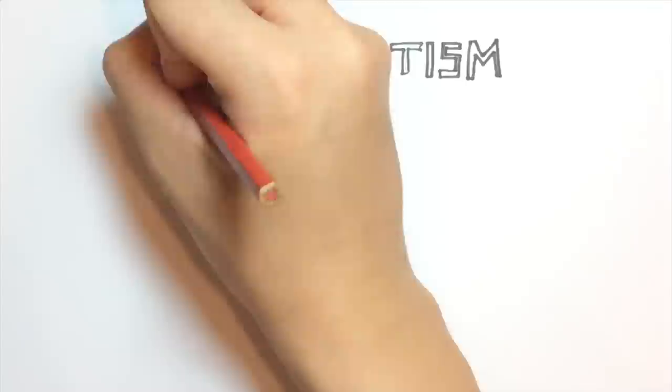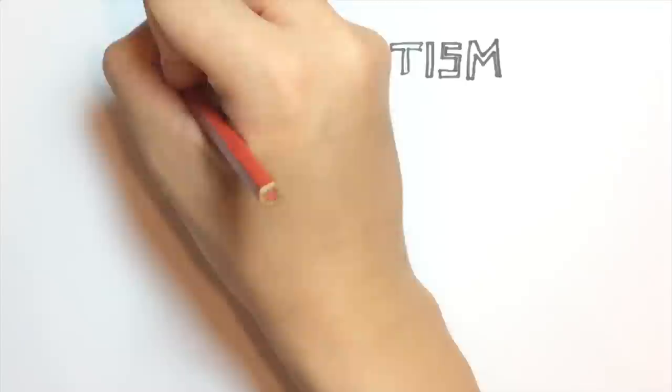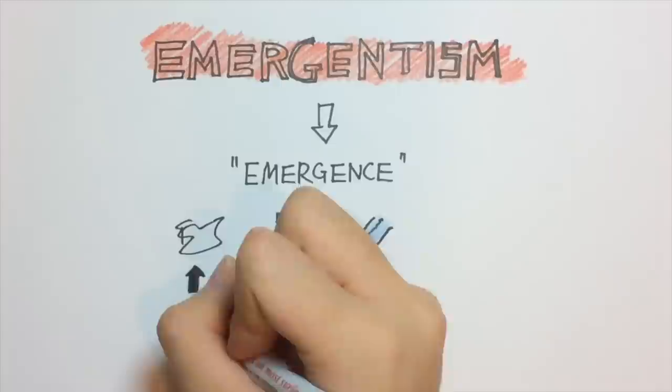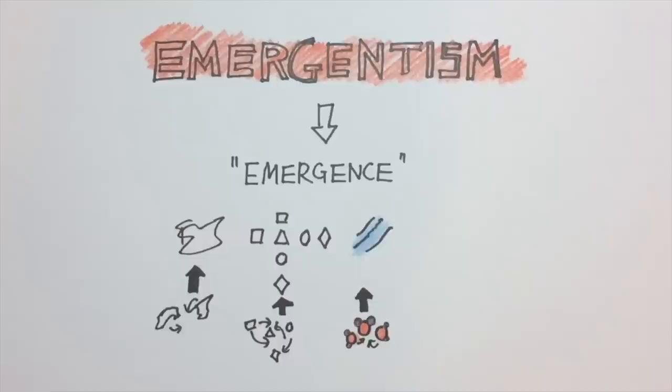One method in the materialist approach is called emergentism. Simply put, emergentism is the belief in emergence—a process whereby larger entities' patterns and characteristics arise through interactions among smaller or simpler entities that, on their own, do not show such characteristics.